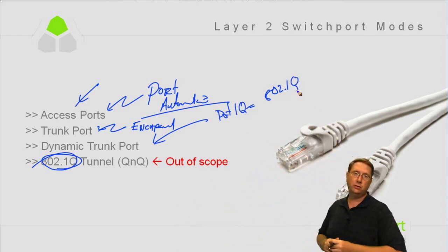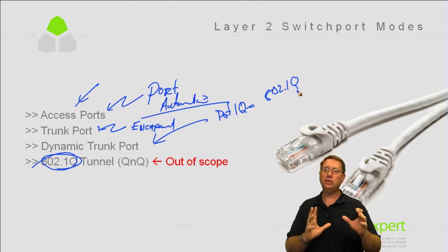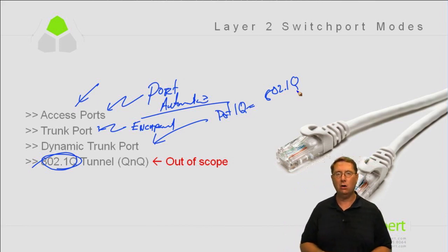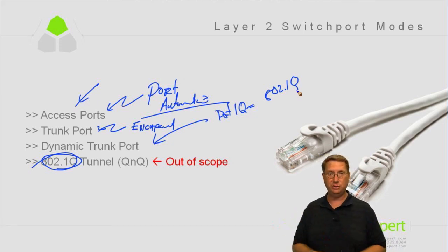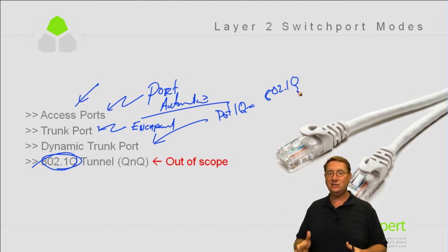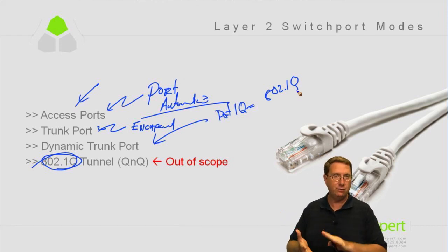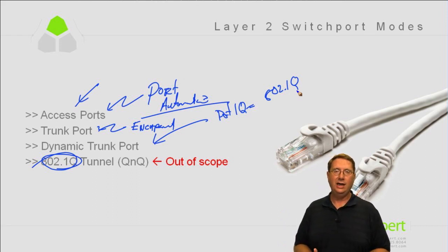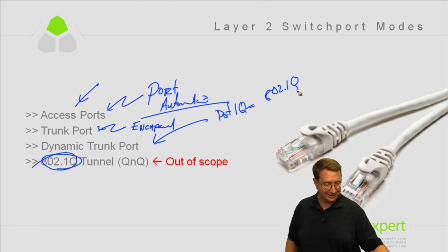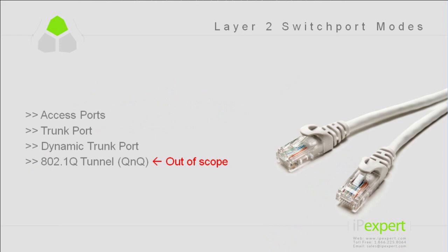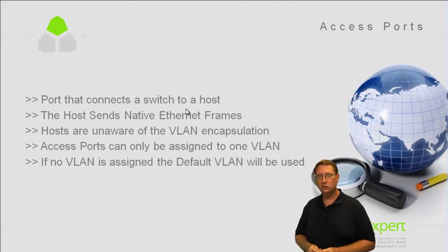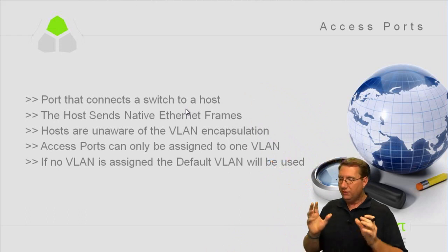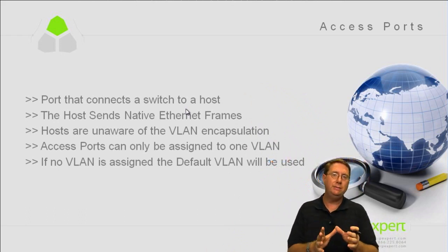We can operate trunk ports either statically or dynamically. Dynamic negotiation of trunks uses a special protocol called DTP — Dynamic Trunking Protocol. Through DTP, switches exchange information allowing them to negotiate links under certain circumstances. As CCIE routing and switching candidates, we need to understand every possible permutation in order to get our layer 2 environment up and operational as quickly as possible. Let's start looking at port types from the top down, beginning with the access port.